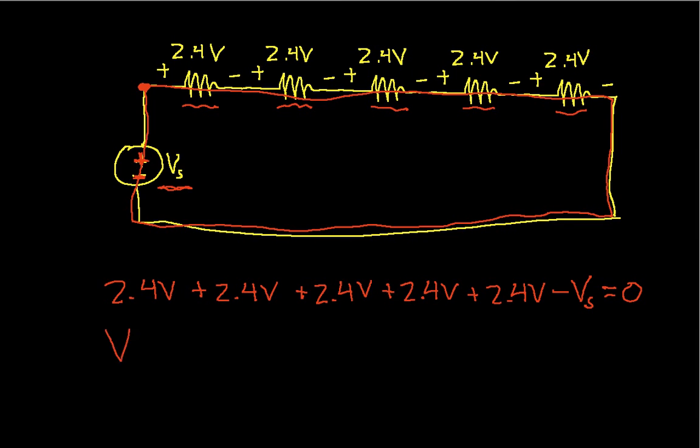So I can solve for Vs, and I get Vs is 2.4 plus 2.4 plus 2.4 plus 2.4 plus 2.4. And when I add these guys together, I get 12 volts.